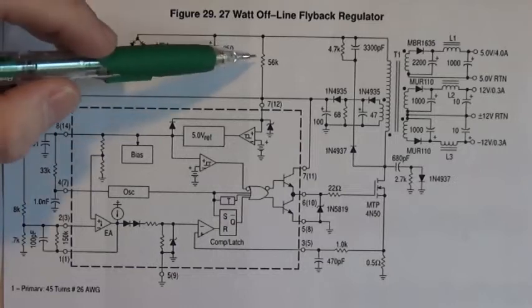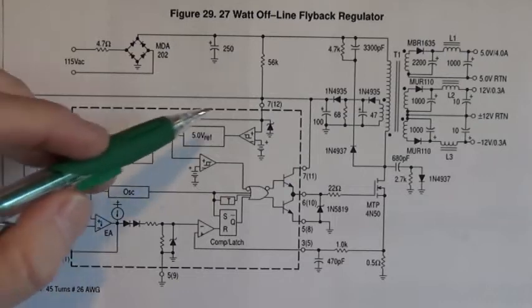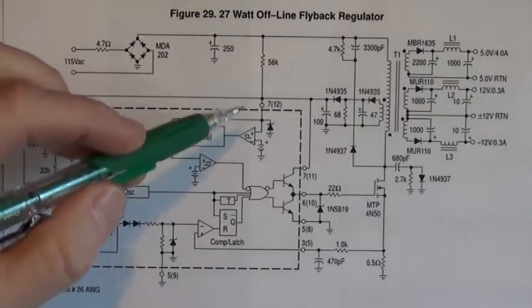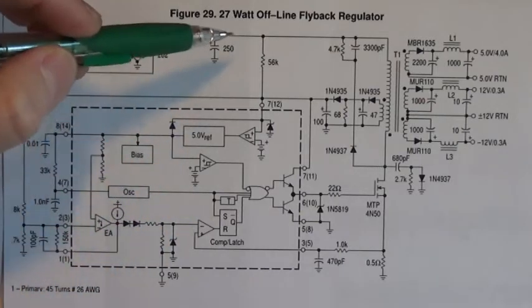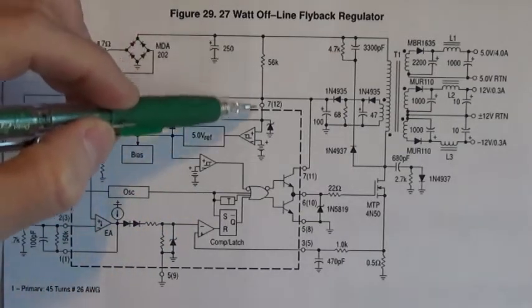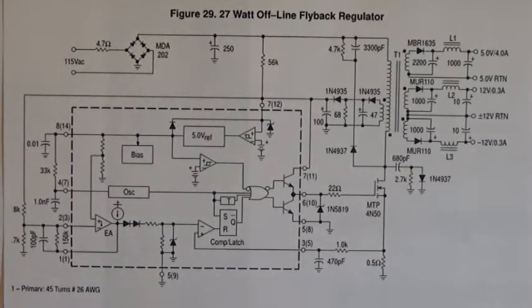Next, this feed forward resistor. In order for this IC to start switching, it has to have a voltage to power up that IC. And we have a 56k feed forward resistor right here on this schematic. It's different for every circuit that you'll see.